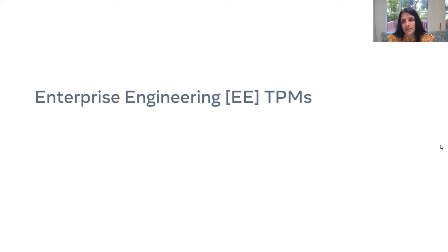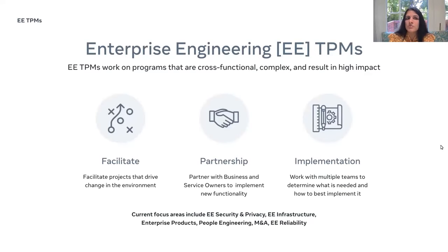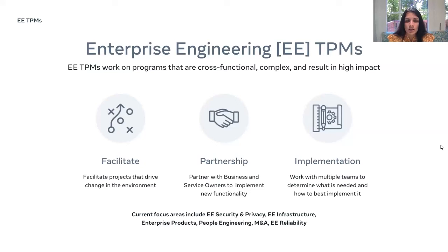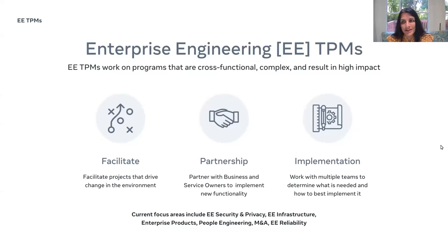In addition to product TPMs, infra TPMs, and FRL TPMs, there is a group of enterprise engineering TPMs. These TPMs work on cross-functional, complex programs that result in high impact — primarily internal products. They facilitate and partner with business and service owners to implement new functionality and work with multiple teams for flawless execution. Current focus areas include enterprise engineering security and privacy, enterprise engineering infrastructure, enterprise products, people engineering, M&A (mergers and acquisitions), and enterprise engineering reliability.